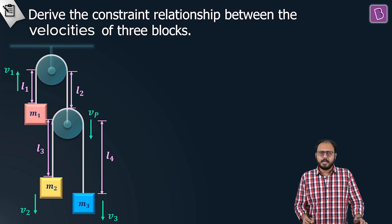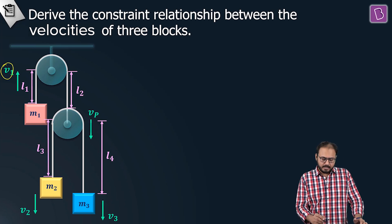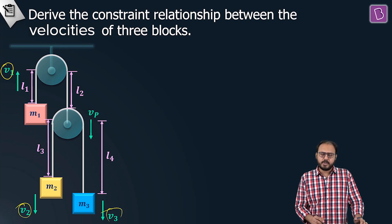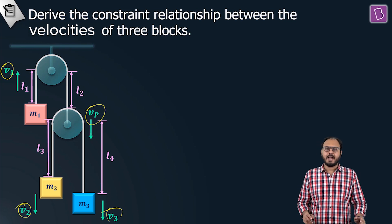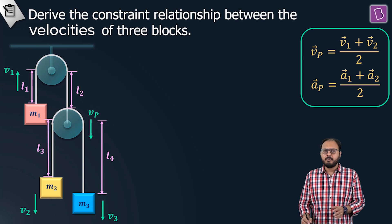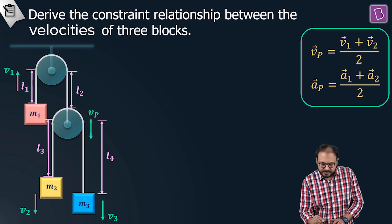Divide it into intercepts and assume variables. Let's say block m1 goes upwards with v1, block m2 goes downwards with v2, block m3 goes downwards with v3, and the pulley goes downwards with vp. We are supposed to find the relationship. The pulley formula is for your reference on the right-hand side.